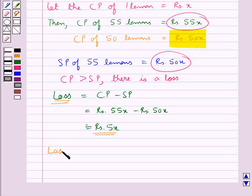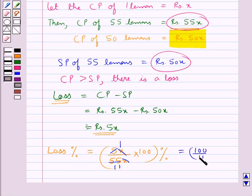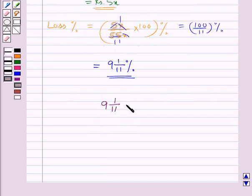Loss percent is given by loss upon cost price of 55 lemons, that is 5x upon 55x, into 100 percent. x cancels with x, and 5 times 11 is 55, so this is equal to 100 upon 11 percent, which equals 9 and 1 upon 11 percent. Hence our final answer is 9 and 1/11 percent.